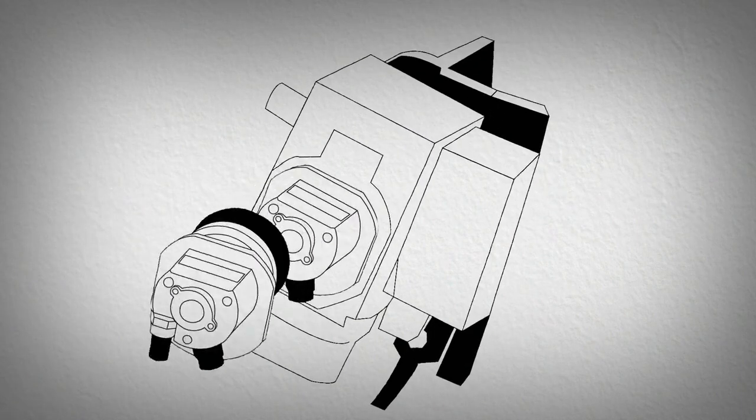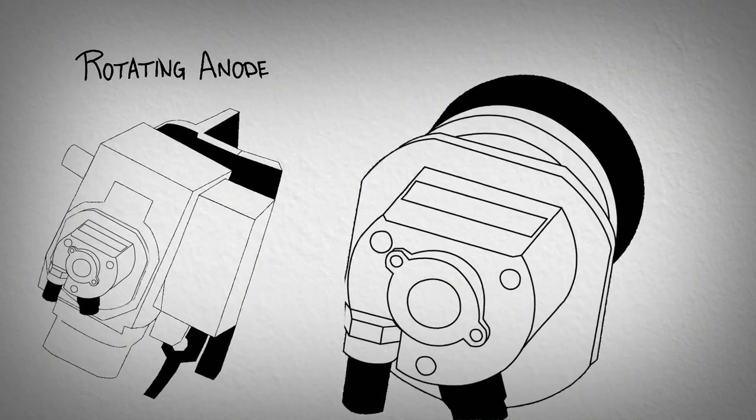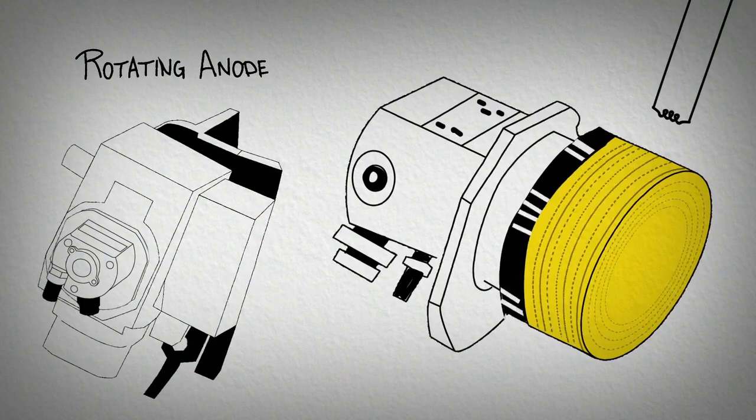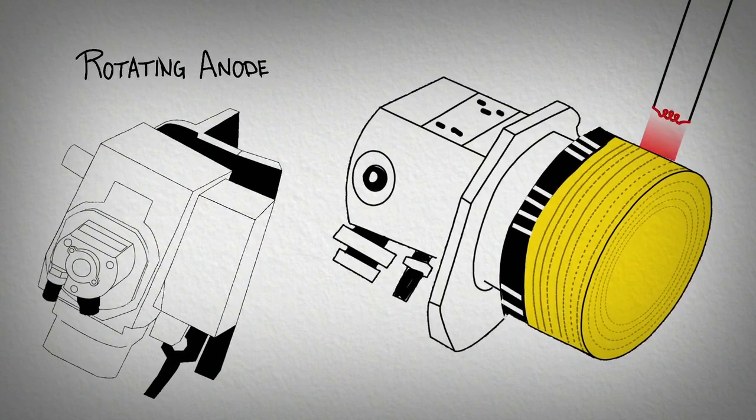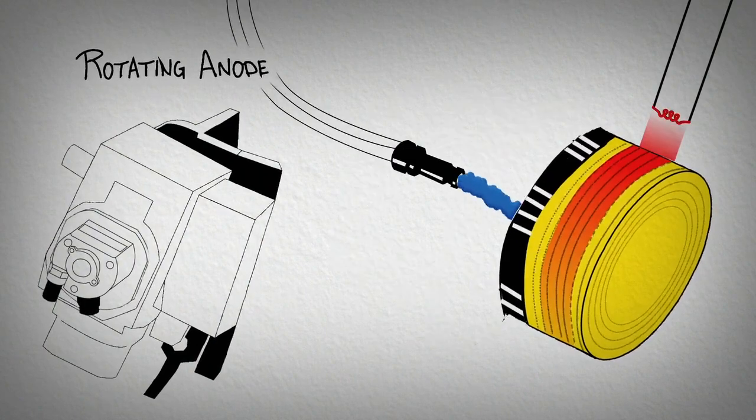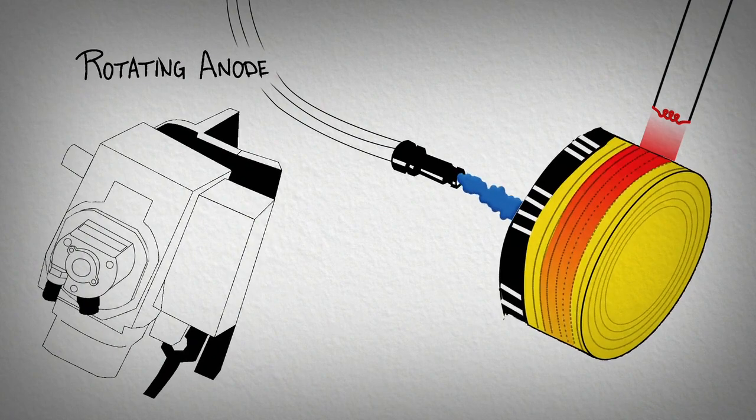If maximum signal is required, a rotating anode source is the best choice. The anode is spun at several thousand RPM in a vacuum chamber, evenly distributing the heat across the entire surface. Because of this, it can be operated at a much higher power level.